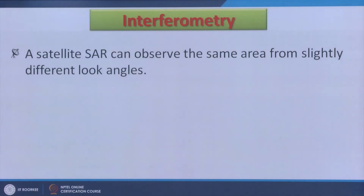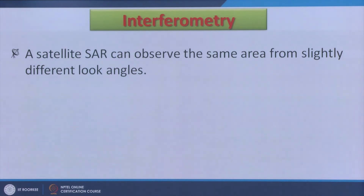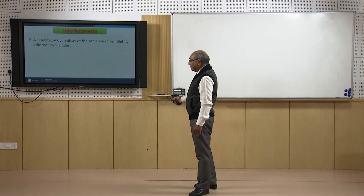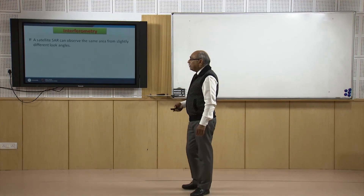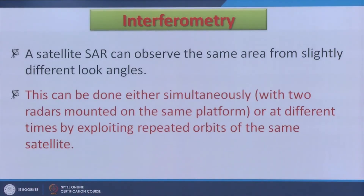Interferometry requires that the same area should have been observed at least twice — maybe from different angles or from the same angle with changes on the ground in between. If this happens, we can measure or estimate ground deformations that have taken place between the two acquisition dates. The satellite SAR can observe the same area from slightly different look angles. In spaceborne radar, it is very difficult to revisit the same area with the exact same look angle, but those differences can be processed and deformation estimations can still be done very accurately.